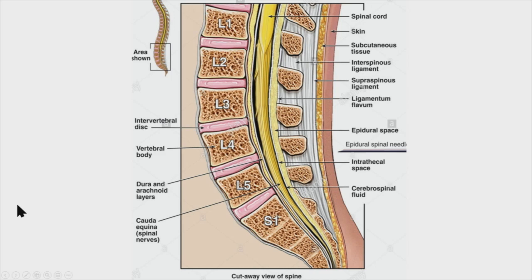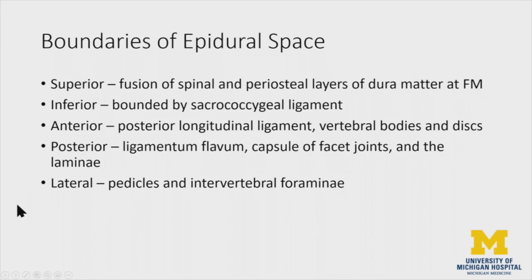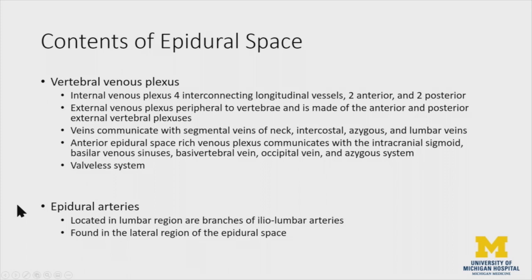So the epidural space is probably made up of fat. Superiorly, there's a fusion of the spinal and periosteal layers of the dura mater at the foramen magnum. Inferiorly, it's bounded by the sacrococcygeal ligament. Anteriorly, it's the posterior longitudinal ligament, and vertebral body and disc. Posteriorly, it's the ligamentum flavum, the capsule, the facet joints, and the lamina. Laterally, it's the pedicles and intervertebral foramen.